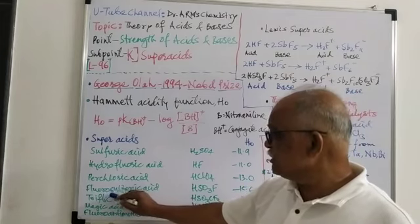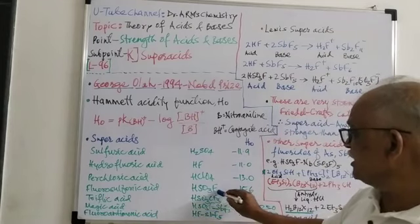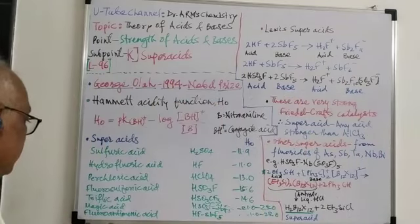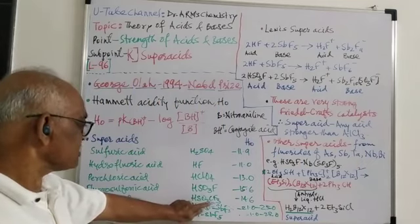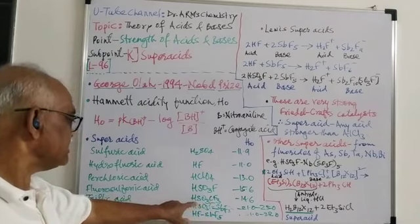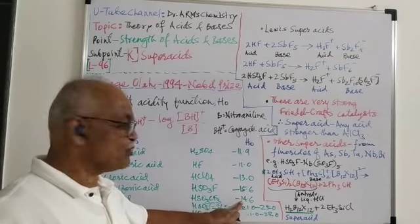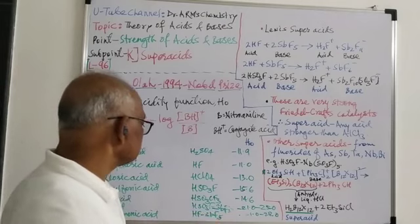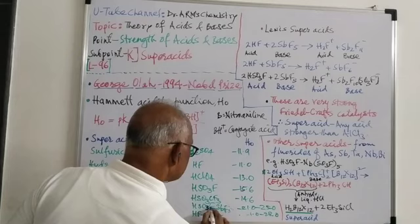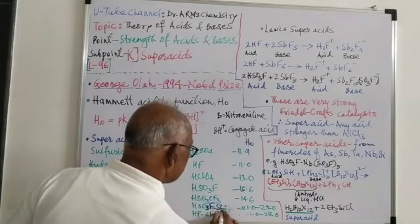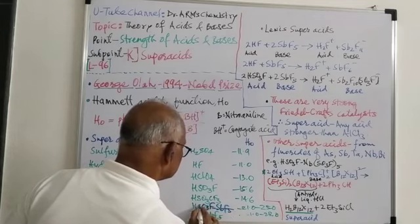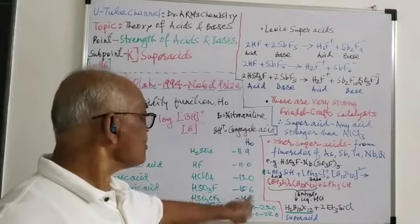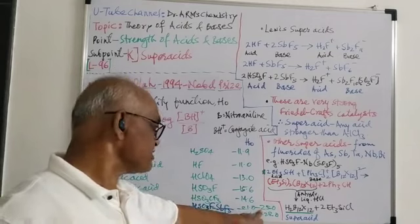Again, if we consider another example, fluorosulfuric acid, HSO3F, the value is minus 15.6. It is also super acid. Next is triflic acid, that is HSO3CF3, trifluoromethane sulfonic acid, that is having H0 minus 14.6. Then magic acid is HSO3F-SbF5. Depending upon its concentration, the H0 is ranging between minus 21 to minus 25.